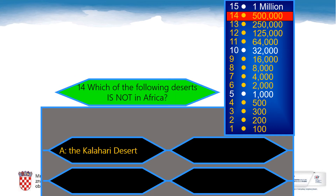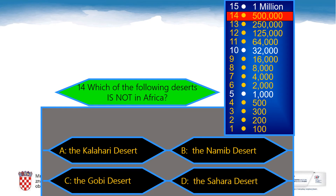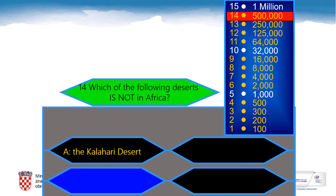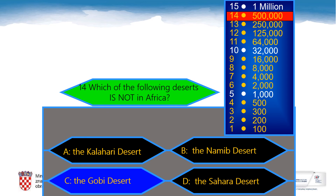You are only two questions away from one million points. Are you ready? Which of the following deserts is not in Africa? A: The Kalahari Desert, B: The Namib Desert, C: The Gobi Desert, D: The Sahara Desert. And the correct answer is the Gobi Desert. The Gobi Desert is in China, not in Africa.